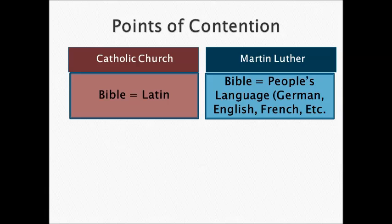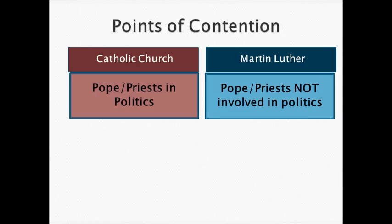Another point is that during the Reformation, the Catholic Church only wrote the Bible in Latin, so only those who could read Latin could read it — and most people couldn't. Martin Luther translated the Bible into the people's language, or their vernacular: German, English, French, etc. The final point of contention was that popes and priests were very much involved in politics — the Pope was the one who called for the Crusades. Martin Luther said popes and priests should not be involved in politics and should just stick to being religious leaders.